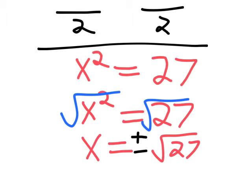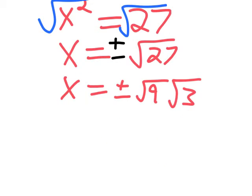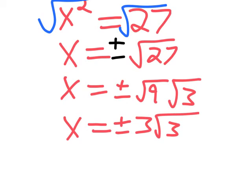Typically in math, we don't leave this as our final solution because you can reduce this radical. You can rewrite it as 9 times 3, which gives you 27. I specifically rewrote it as these factors because the square root of 9 is known. So this would be our final answer: x equals positive or negative 3 square root of 3.